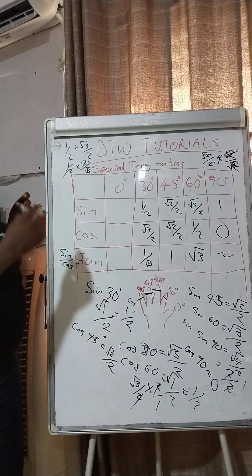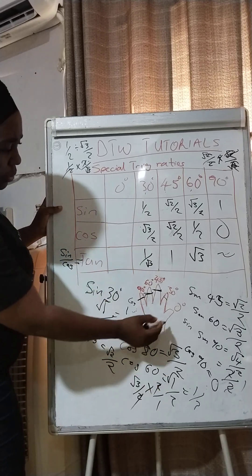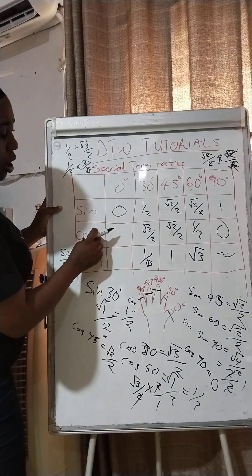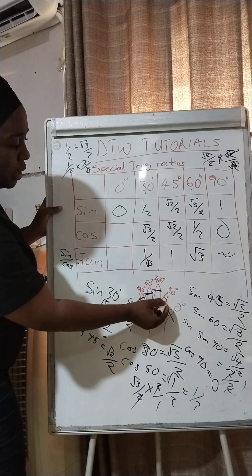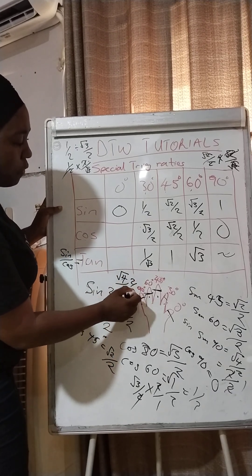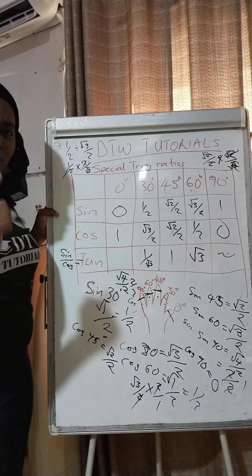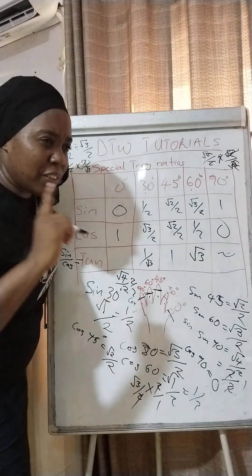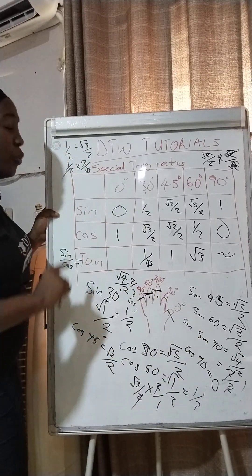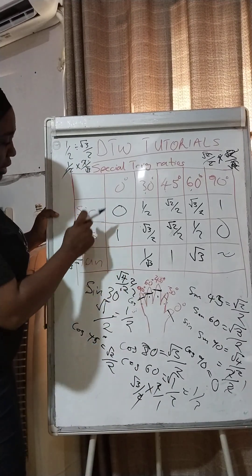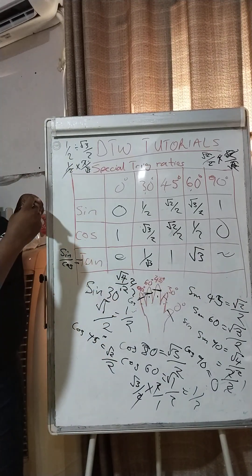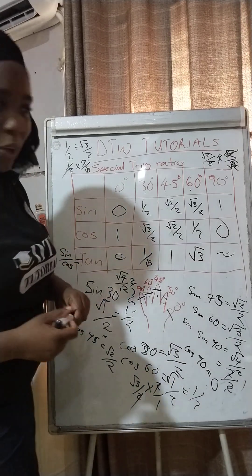For 0 degrees: sine 0 is zero because there are no fingers on that side. Cosine 0 — there are four fingers remaining, so that's the square root of four over two, which is two over two, giving us one. Make sure you know this — cosine 0 is one, not zero! Some people get this wrong. Tan 0 is sine 0 divided by cosine 0, which is zero divided by one, giving us zero.